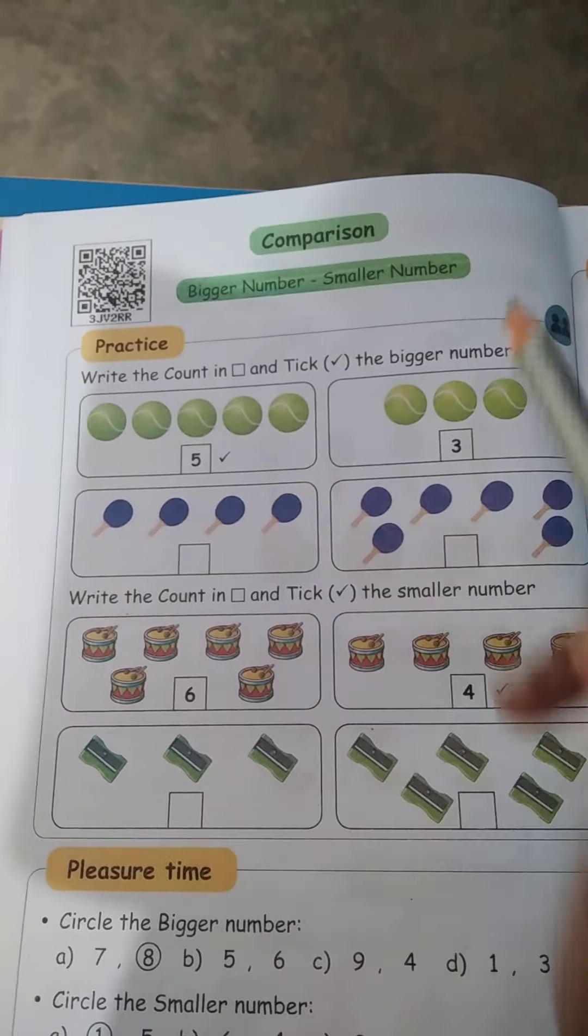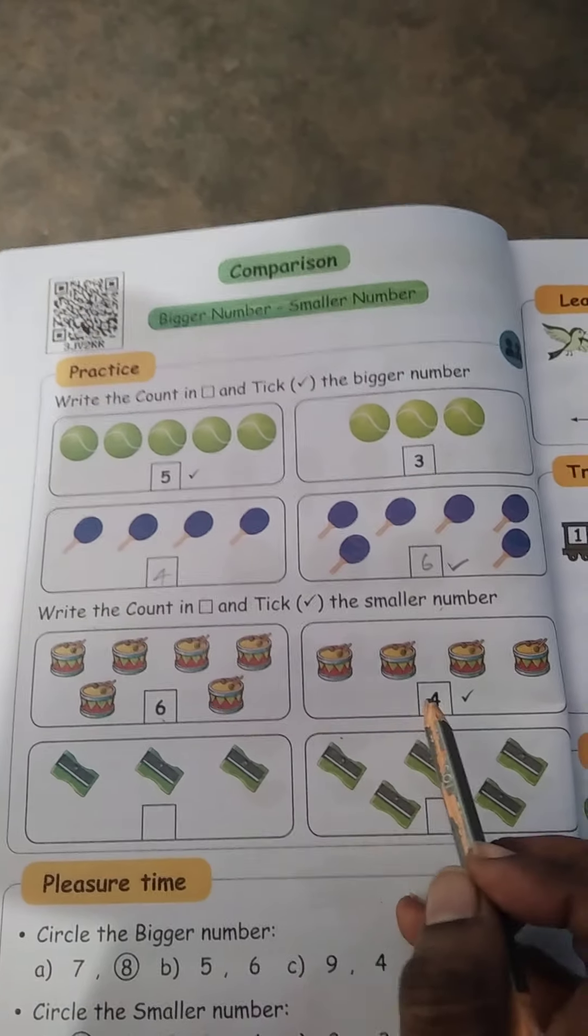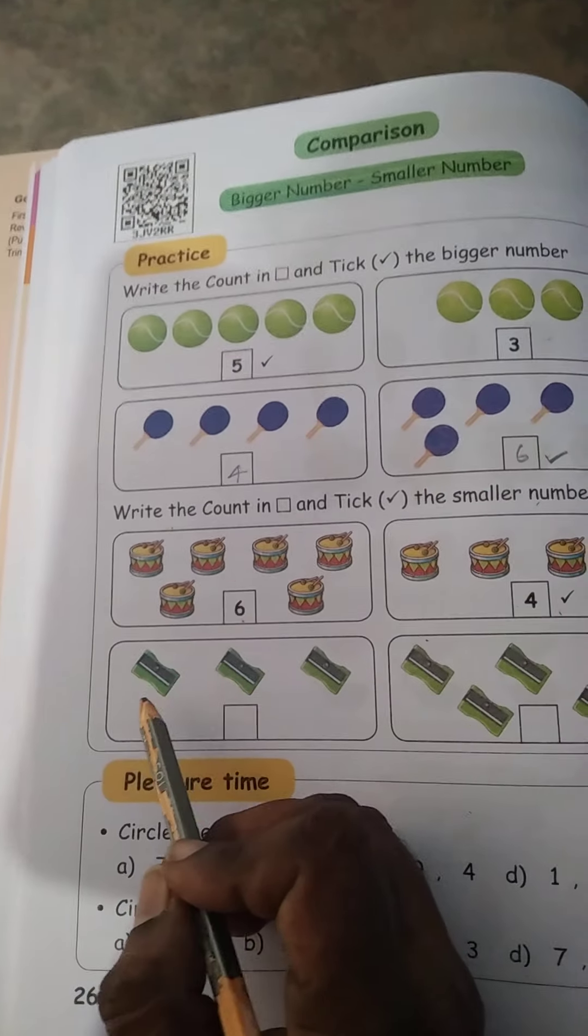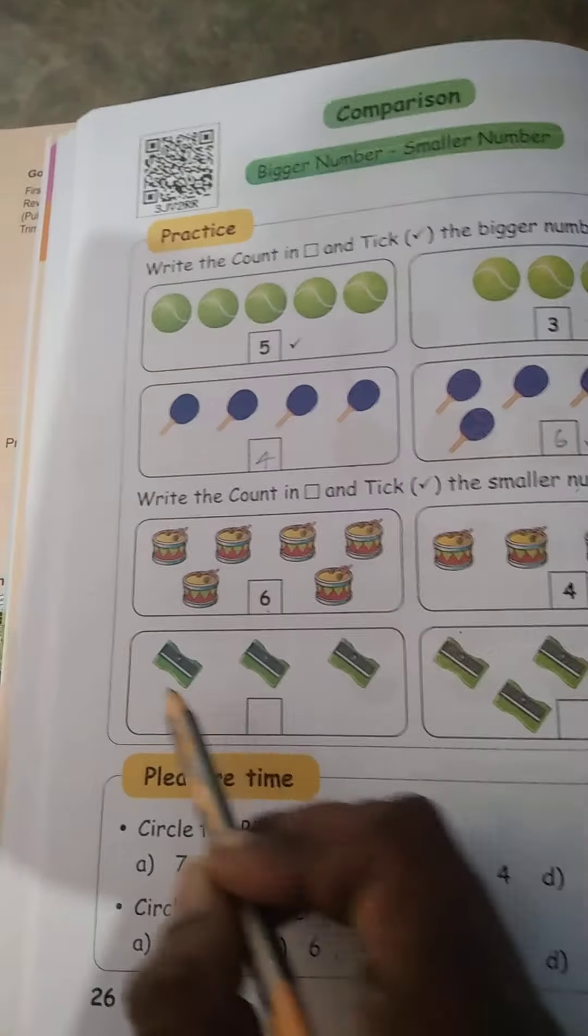Write the count in a box and tick the smaller number. Next you have to tick the smaller number. Count: 1, 2, 3, 4, 5, 6. 6. 1, 2, 3, 4. 4. Which is smaller? Yes, 4 is smaller.